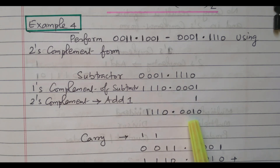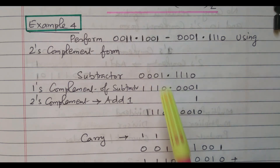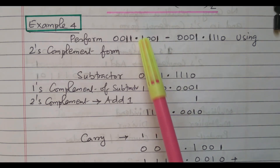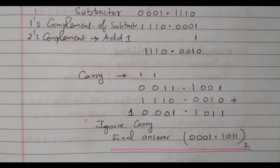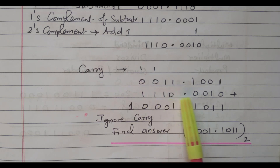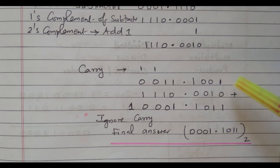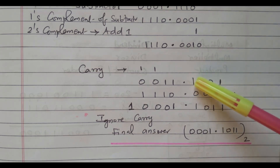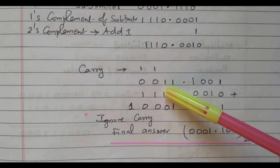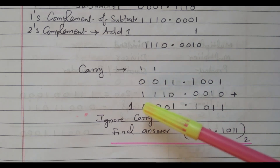Now what we need to do? This 2's complement of the second number is added with the first number, in order to perform subtraction. The first number is 0011.1001, and the 2's complement of the second number is 1110.0010. Now we need to add these 2 values: 1+0=1, 0+1=1, 0+0=0, 1+0=1, dot, 1+0=1, 1+1=0 carry 1, 1+1=0 carry 1, 0+1 with carry gives 0 carry 1.